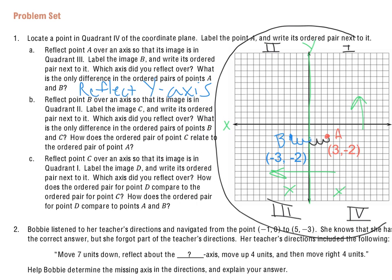What is the only difference in the ordered pair of points A and B? I would probably write this down, but what's the only difference between the ordered pair? I see that I have (3, -2). And now I have (-3, -2). So the only difference in this is the X coordinate or the first coordinate went from a positive to a negative. So I'd explain that with the only difference between A and B is the first or X coordinate changed from 3 to negative 3.